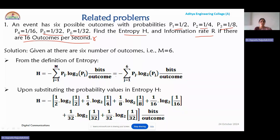We have taken the summation maximum limit as 6. Substituting all the probabilities into the entropy expression: minus of (1/2) log(1/2) base 2, plus (1/4) log(1/4) base 2, and continuing up to (1/32) log(1/32) base 2.